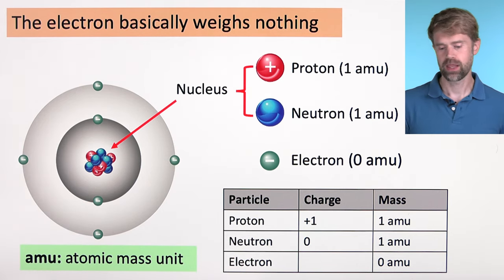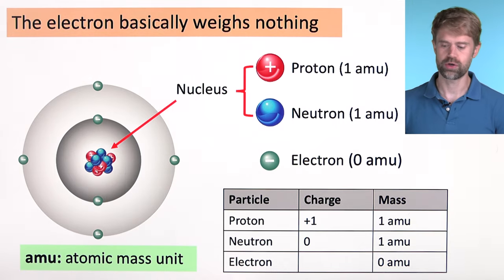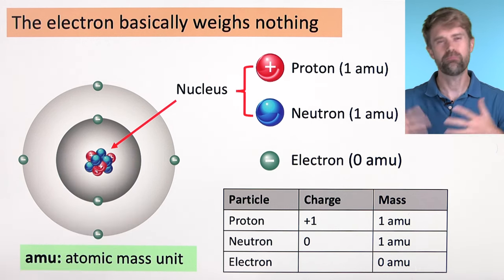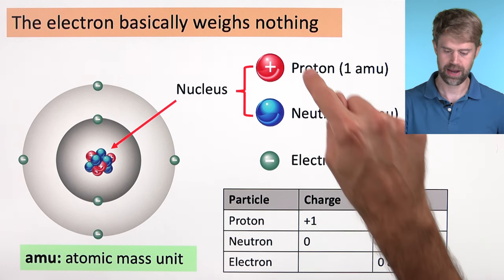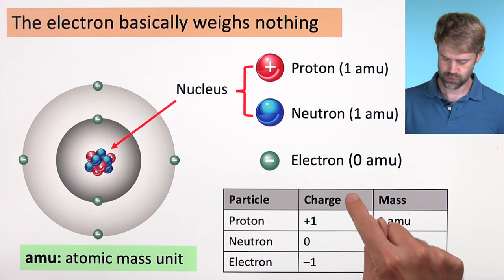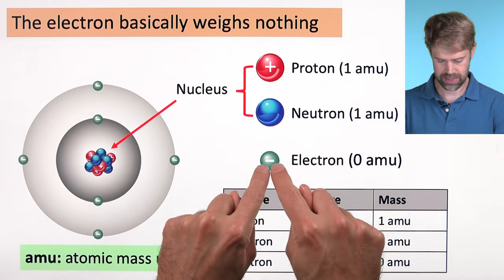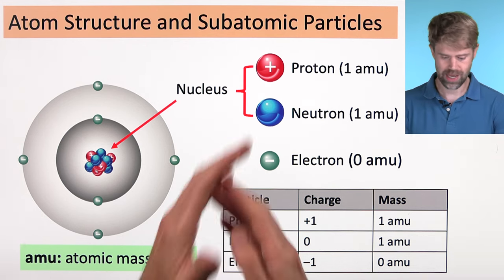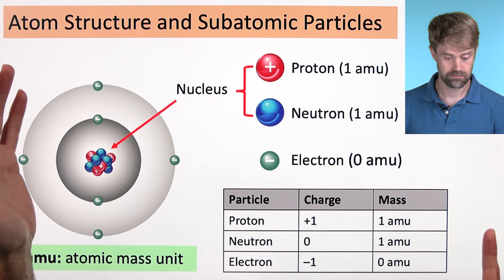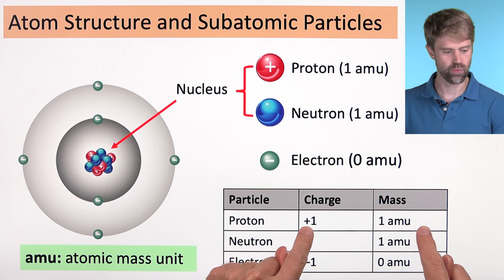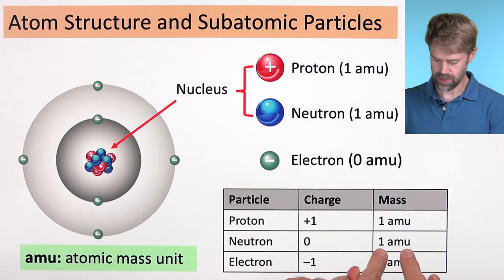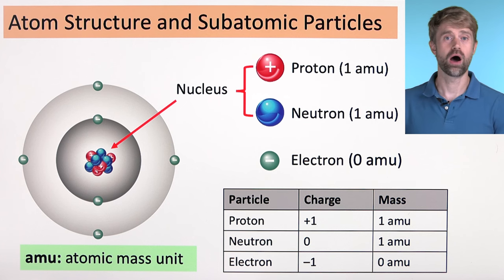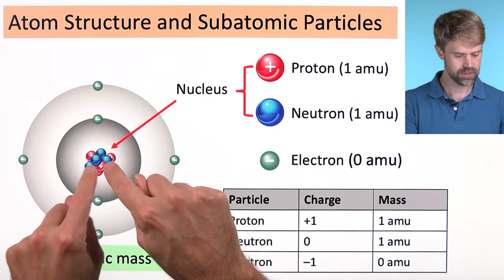Now let's circle back to the electrons. The electron is even smaller than a proton or neutron, and it's so light that we assume it has a mass of zero AMU — it basically weighs nothing compared to the other subatomic particles. For electrical charge, the electron has a minus one charge, shown with a minus sign on drawings. To review: a proton is plus one with a mass of one AMU; a neutron is neutral with a mass of one AMU; an electron has a charge of negative one and essentially no mass. Protons and neutrons live in the nucleus.